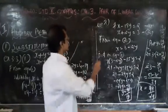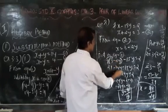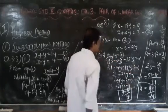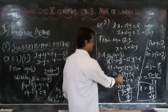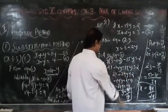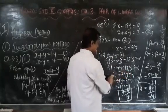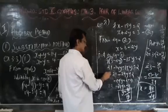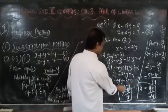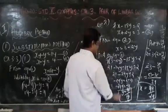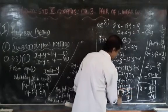Multiplying out: 7 times 3 gives 21, and 7 times 2y gives 14y, so we have 21 minus 14y minus 15y equal to 2. Combining like terms: 21 minus 29y equal to 2. Bringing 21 to the right side: minus 29y equal to 2 minus 21, that is minus 29y equal to minus 19. Removing the minus from both sides: y equal to 19 by 29.